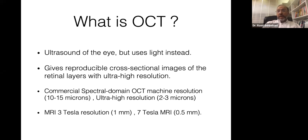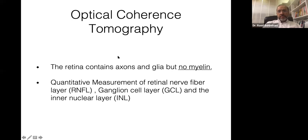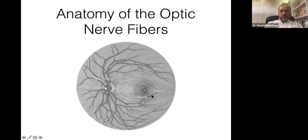A 3 Tesla MRI resolution is 1 millimeter, so even a commercial OCT device is about 100 times higher in resolution than a 3 Tesla MRI. This gives neurologists a unique opportunity to look at the axons — the retina has axons with no oligodendrocytes, so there is no myelin. It is the only real place in the CNS where you can look directly at axons. OCT provides a quantitative assessment of the retinal nerve fiber layer, the ganglion cell layer, and the inner nuclear layer.